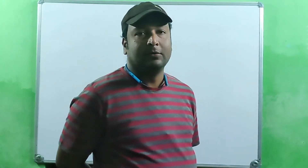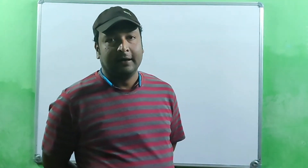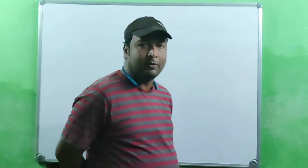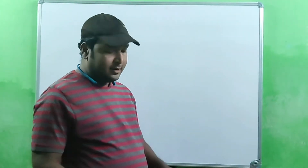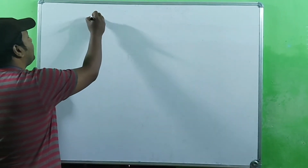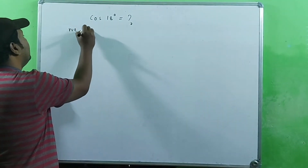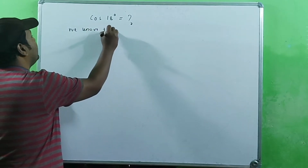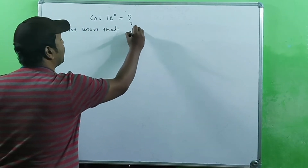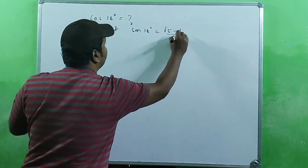Hello students, today we will find the value of cos 18°. In the last video we found the value of sine 18°. Please check the description box. Now in today's class we will find the value of cos 18°. We know that sine 18° is equal to (√5 − 1) / 4.